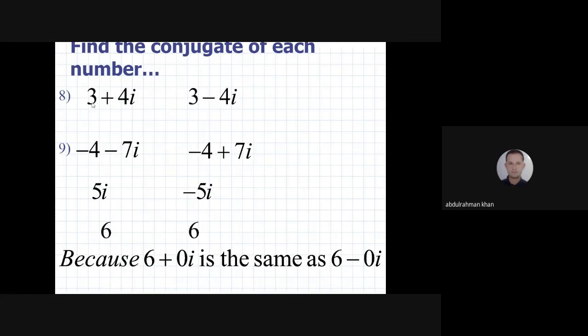The next question is minus 4 minus 7i. The real part is minus 4, and 7i is the imaginary part. Here we have minus, so change it to plus. The conjugate is minus 4 plus 7i.